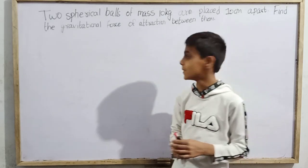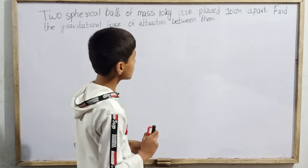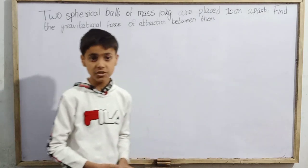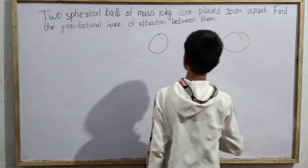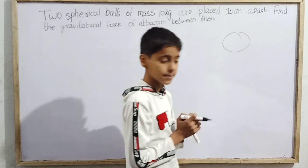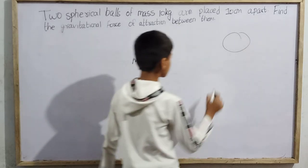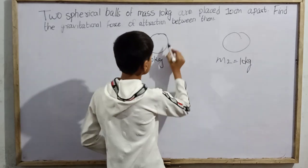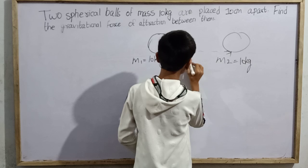This question is from Concepts of Physics Part 1 by H.C. Verma. The question is: two spherical balls of mass 10 kg are placed 10 cm apart — find the gravitational force of attraction between them. We consider these as point particles, so the first particle has mass m1 = 10 kg and m2 = 10 kg, with a separation of 10 cm.